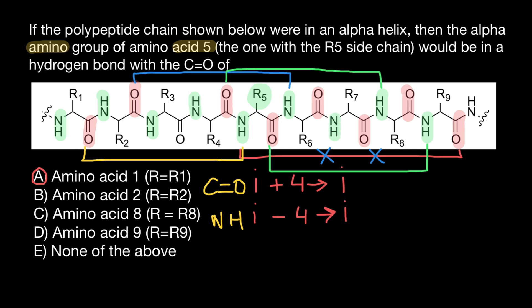What about this amino group? This is the amino group of amino acid number seven. Seven minus four is three, and here's amino acid number three with its carboxylic group — so here's another hydrogen bond. As you can see, a polypeptide chain making an alpha helix with nine residues may have one, two, three, four, and five hydrogen bonds.